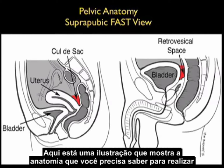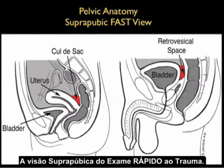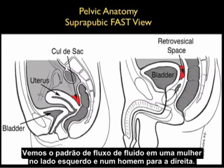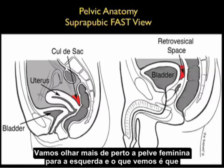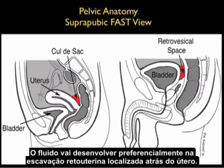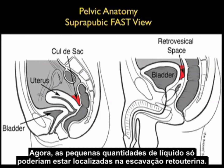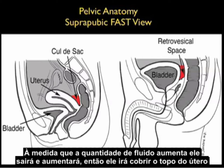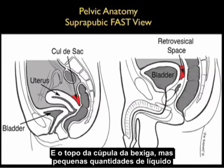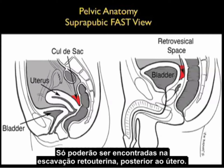Here's an illustration showing the anatomy we'll need to know to perform the suprapubic view. We see the pattern of fluid flow in a female to the left and a male to the right. In the female pelvis, fluid will preferentially develop in the pelvic cul-de-sac located behind the uterus. Small amounts of fluid will only be located in the pelvic cul-de-sac, but as the amount of fluid enlarges it will layer out on top of the uterus and on top of the dome of the bladder.